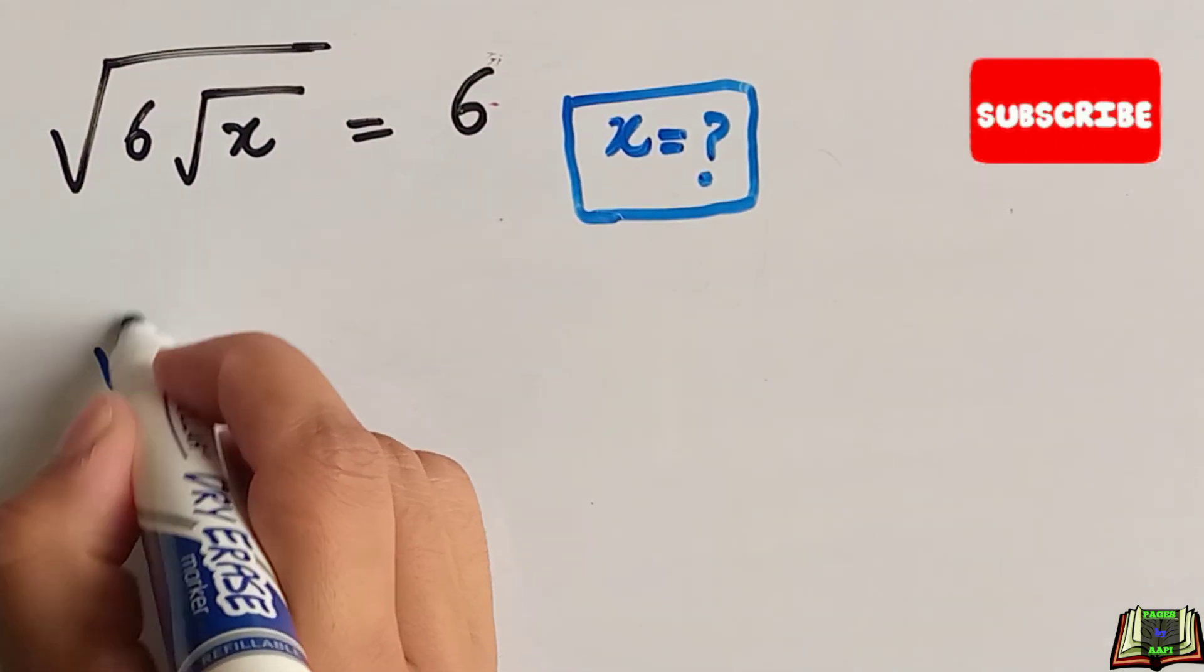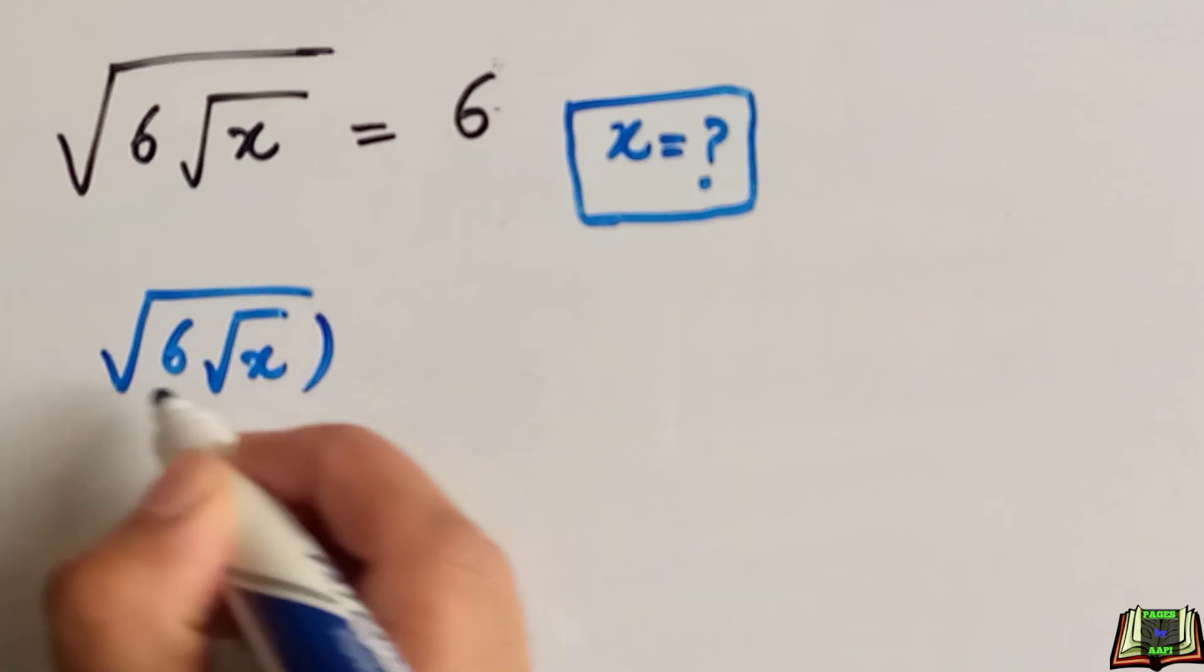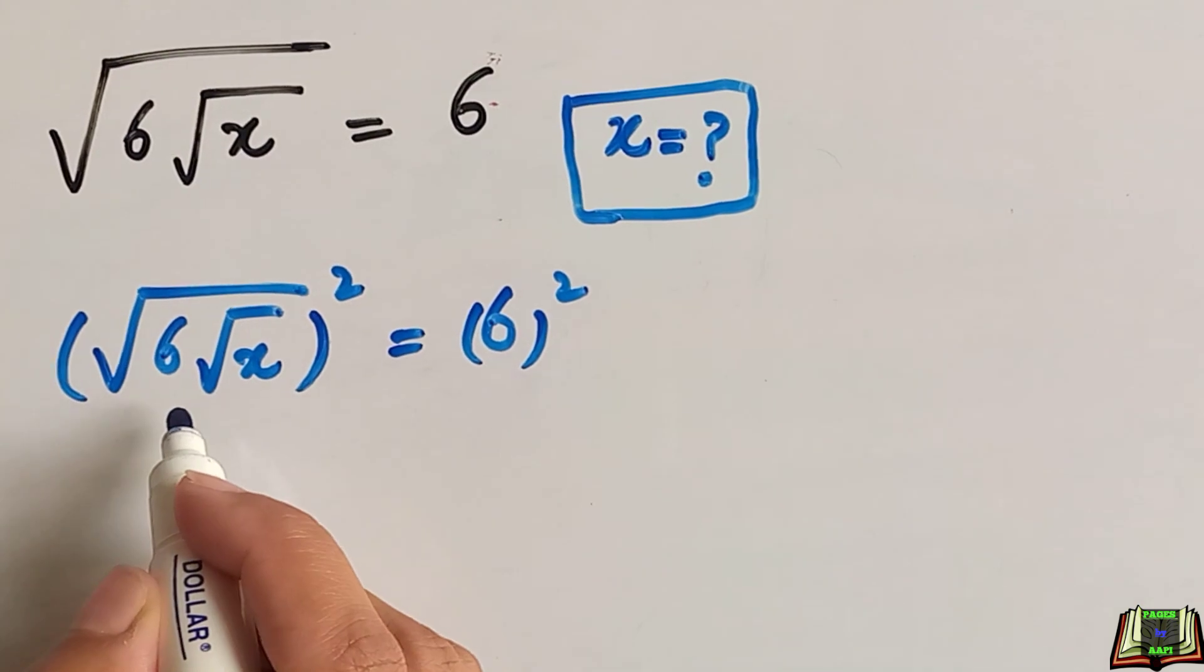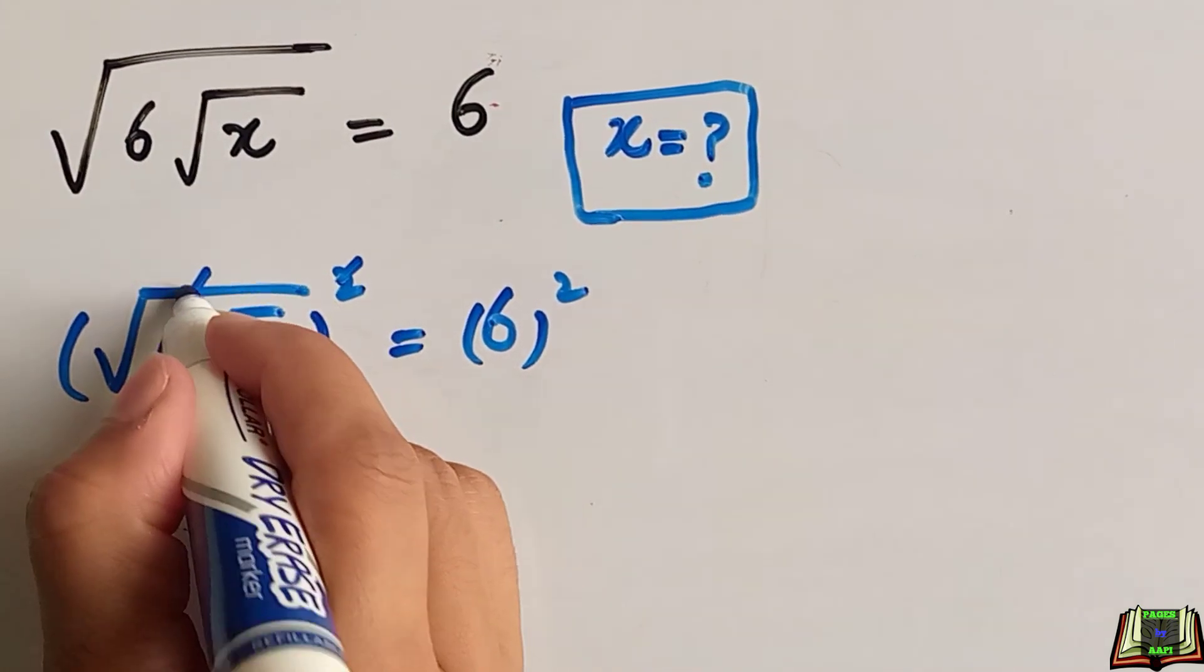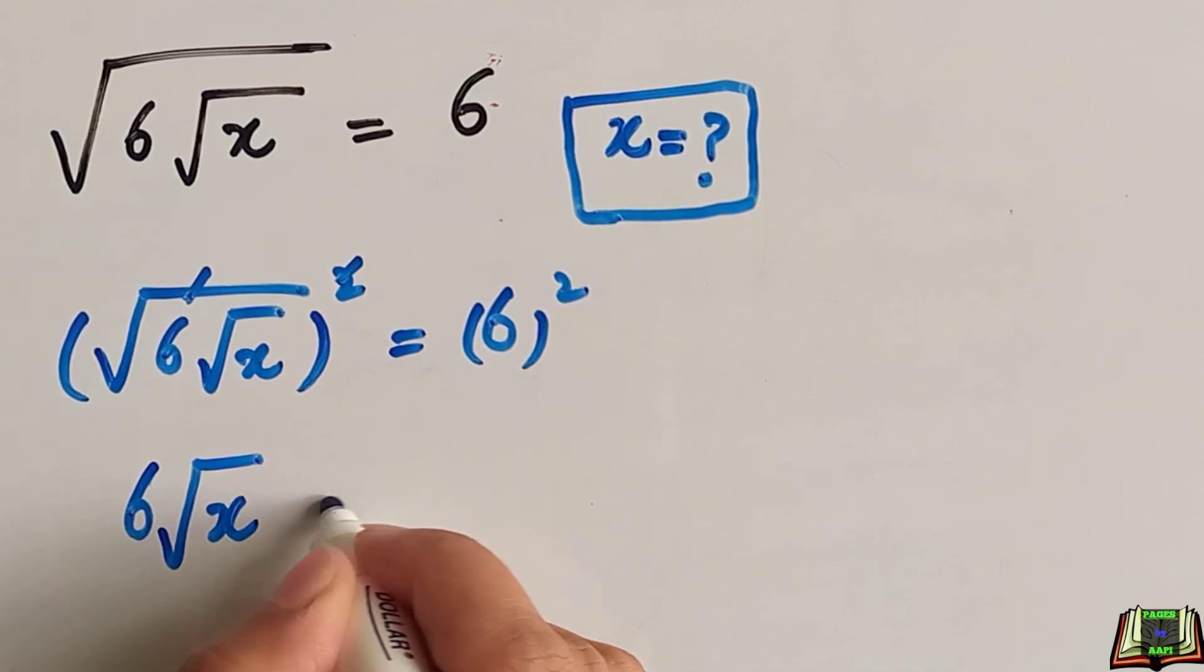First of all, we will take the square of this equation on both sides. So this will be equal to this square and the root cancels out. 6 times square root of x is equal to 6 times 6, which is 36.